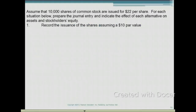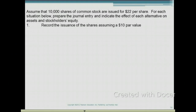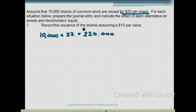This question takes a look at issuing stock above par value. Assume that 10,000 shares of common stock are issued for $22 per share. Prepare a journal entry and indicate the effect on assets and stockholders' equity. First, let's see how much cash we're going to receive: 10,000 shares times $22 per share gives us $220,000.